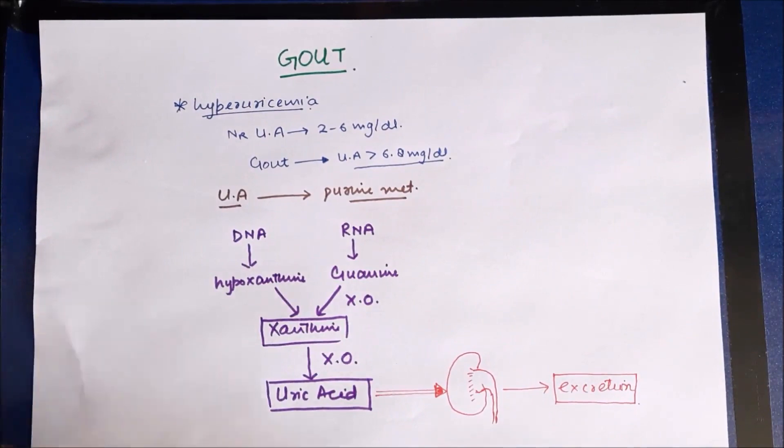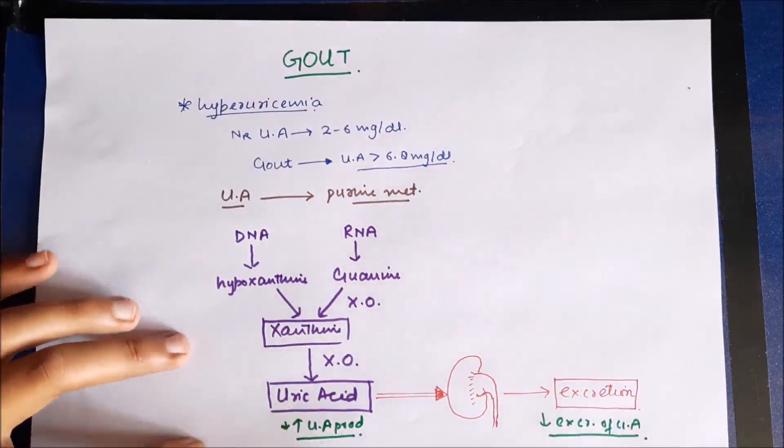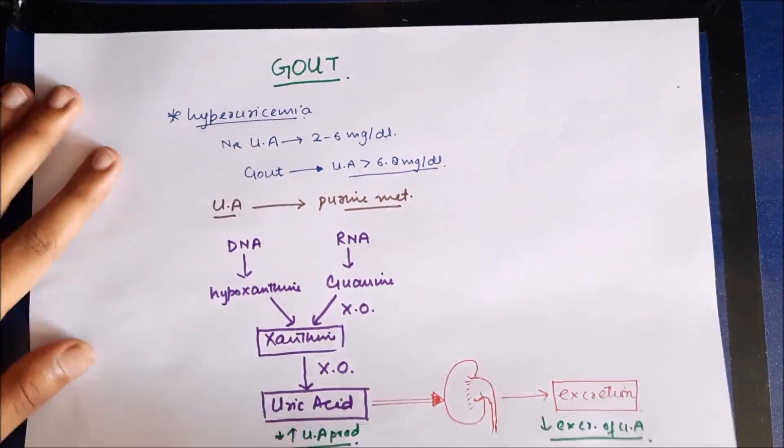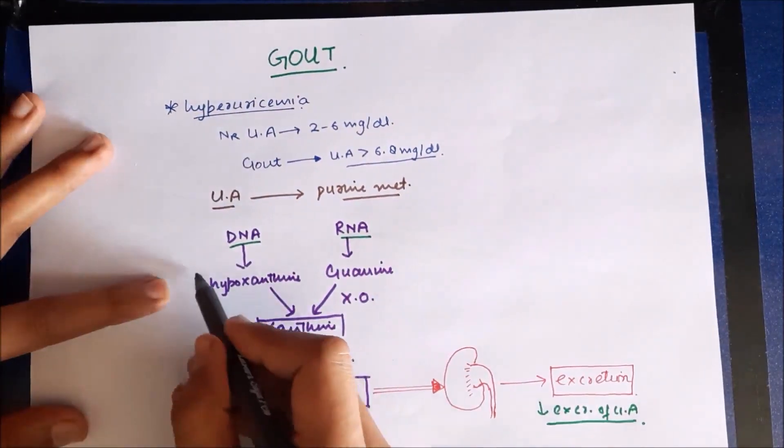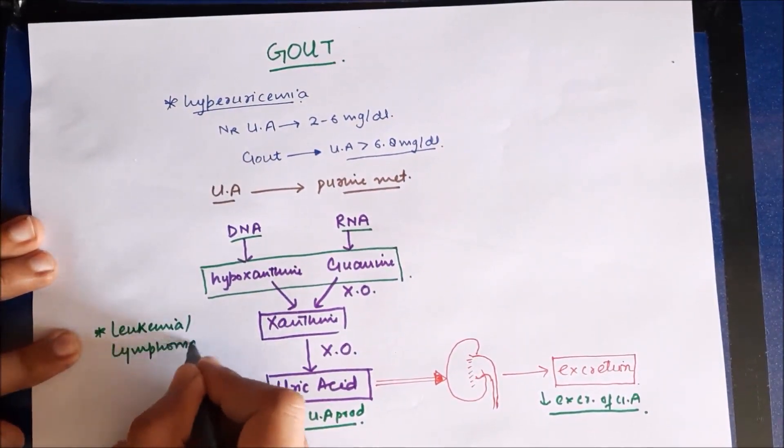Now hyperuricemia occurs whenever there is increased formation of uric acid or when there is decreased excretion of uric acid. So uric acid remains in the blood and results in hyperuricemia. Now there are certain conditions which can increase the amount of DNA and RNA metabolism or hypoxanthine and guanine, predisposing to hyperuricemia.